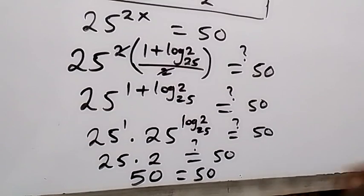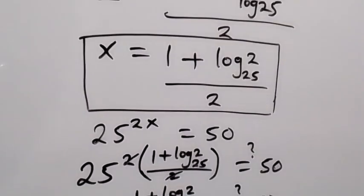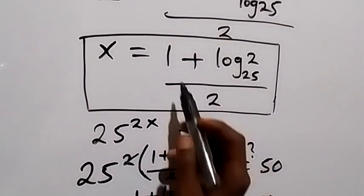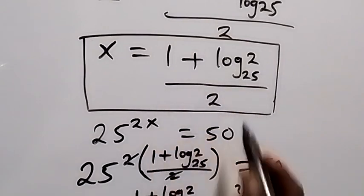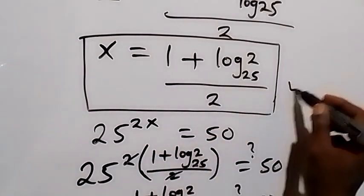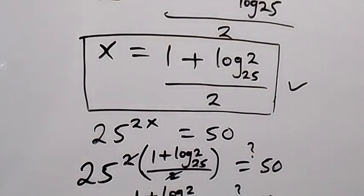The left hand side equals the right hand side. Therefore we can conclude that the value of x equals 1 plus log base 25 of 2, divided by 2, is true. Thank you for watching. Don't forget to give a thumbs up and also subscribe to my channel. Turn your notification bell on so you don't miss out. See you in the next class, bye for now.